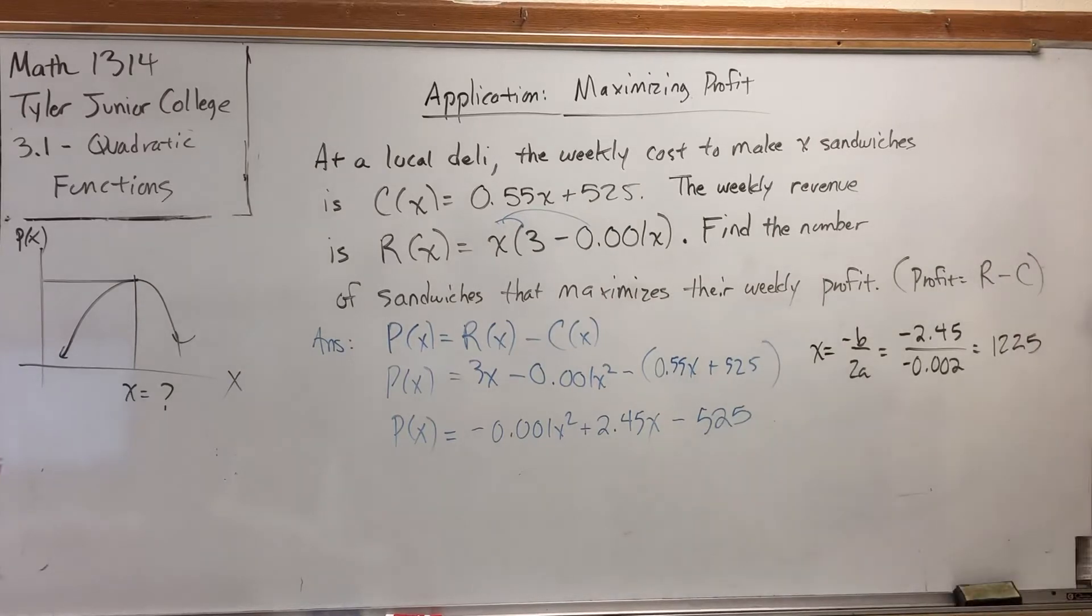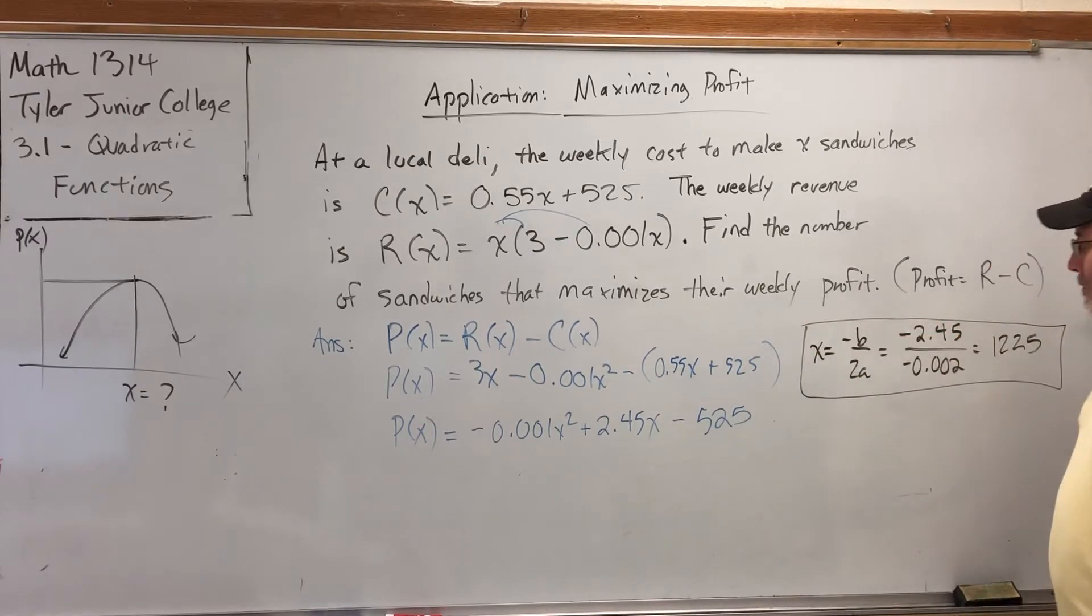That number of sandwiches would give them the higher profit. If they sold more, then they would be selling them for less and spending a little bit more. If they sold less, they would be selling them for a higher cost but spending less. But spending more. I said that backwards. Okay, I'm going to stop trying to interpret why this would be the maximum on the fly because obviously I'm crashing and burning.